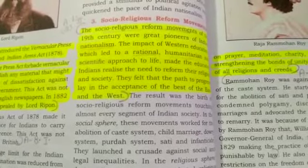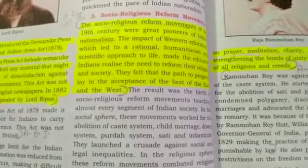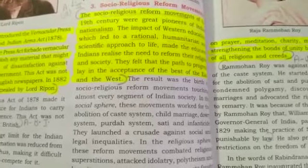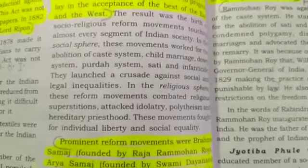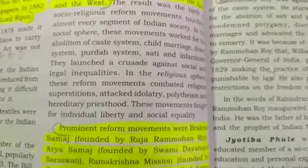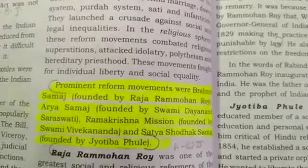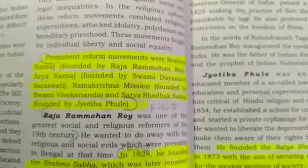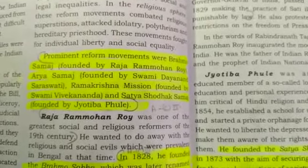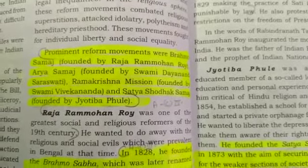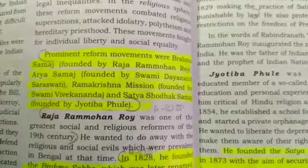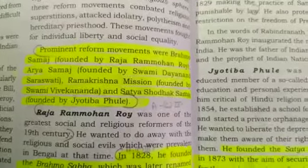This social and religious reform movement touched every segment of Indian society. These societies worked for the abolition of the caste system, child marriage, dowry system, and purdah system. Some of the prominent reform societies were: Brahma Samaj, founded by Raja Ram Mohan Roy; Arya Samaj by Swami Dayanand Saraswati; Ramakrishna Mission by Swami Vivekananda; and Satya Shodhak Samaj by Jyotiba Phule. You will read about the objectives of each society from your book.